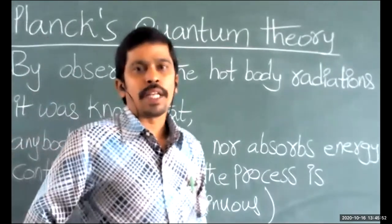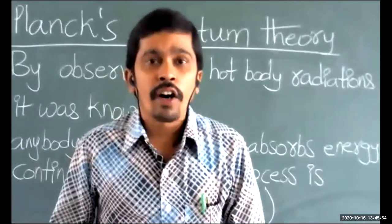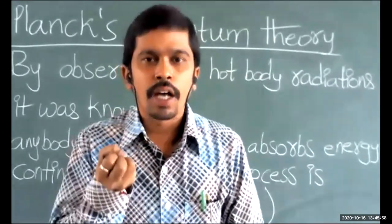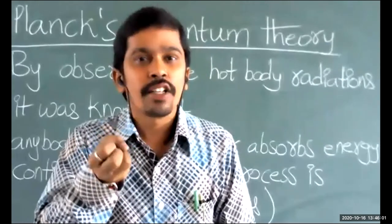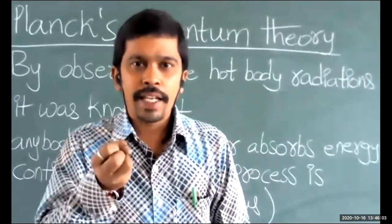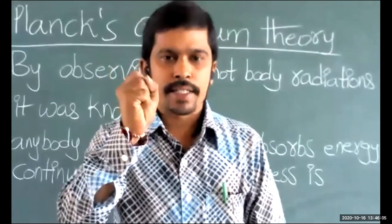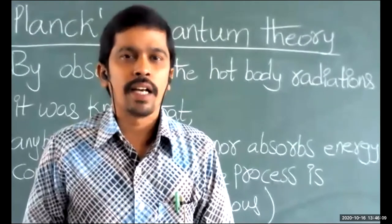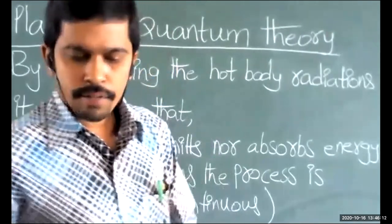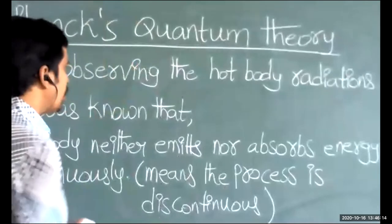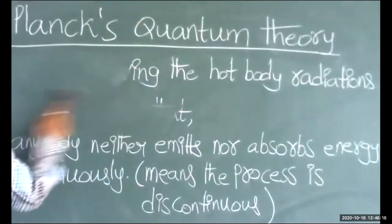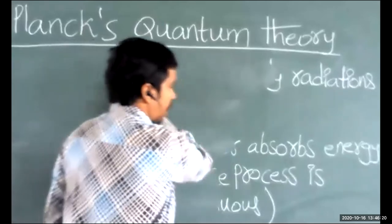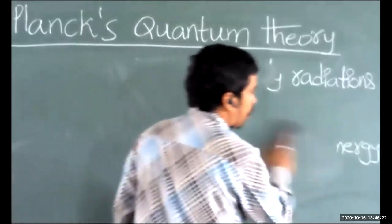According to Planck's quantum theory, any hot body is going to absorb or emit energy in a discontinuous manner, and in the form of small packets. Every small packet is called a quantum. When a hot body emits radiation, the emitted radiation is in discontinuous form and in small packets — every small pocket is called quanta or quantum.